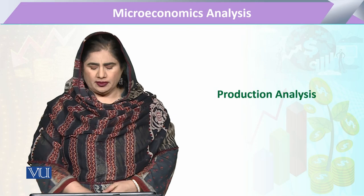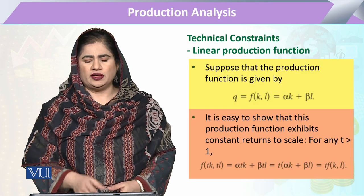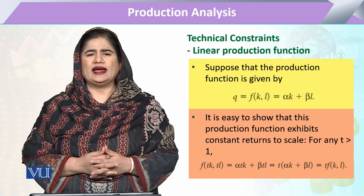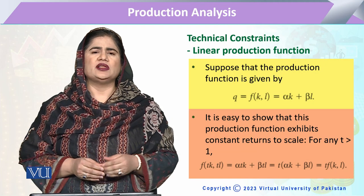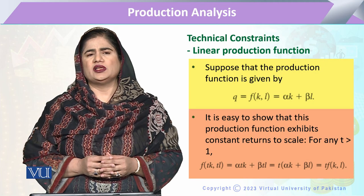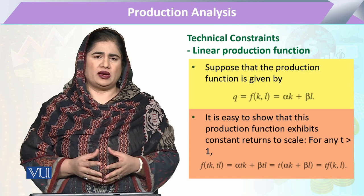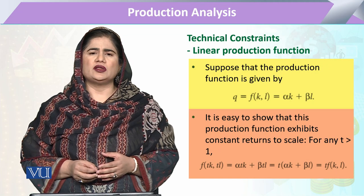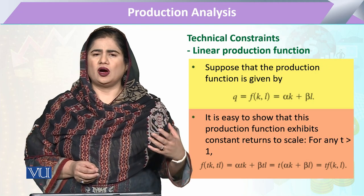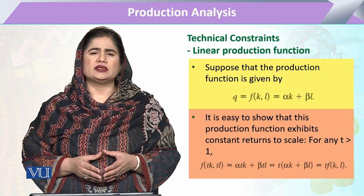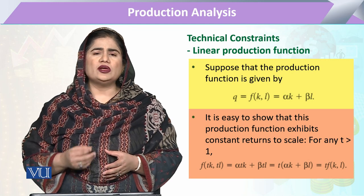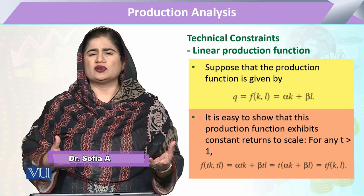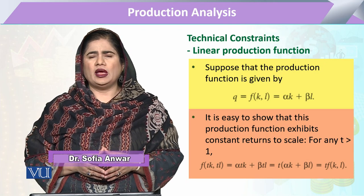Module 133 and we are going to study the linear production function. A production function that expresses the change in output for one unit change in input, such that for every unit change in input there is a constant change in the output. That change in output remains constant or the same.